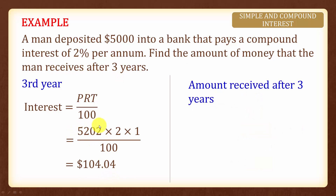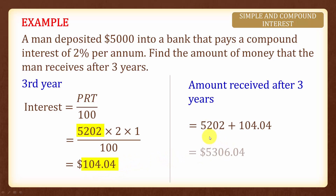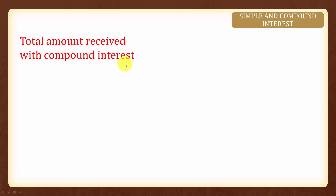Therefore the total amount he receives after three years will be the amount he started with in the third year plus the interest earned, which equals five thousand three hundred and six dollars and four cents. Now there is an easier way to find compound interest by using a formula.